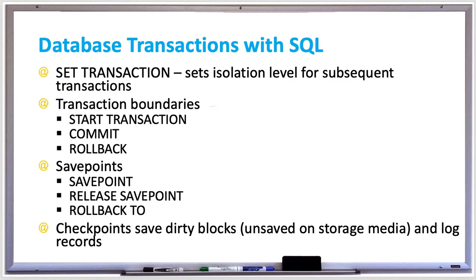A save point saves a specific point in the transaction and it's temporary. When a transaction commits, the save point is released. Save points are managed by three statements and followed by an identifier.